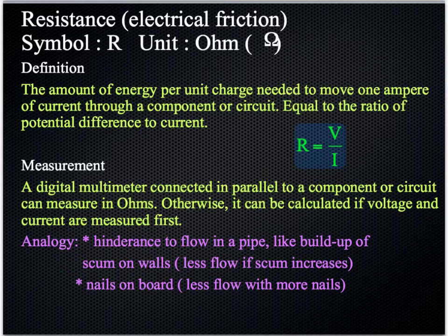A measurement. To measure this, well, you could use a digital multimeter connected in parallel to the component or the circuit. But the circuit needs to be switched off. It can't be on. It can't be live. Otherwise, you could measure voltage and current separately and calculate the ratio yourself to find the value of resistance. Another analogy is the hindrance to the rate of flow of water in a pipe. For example, you could think of the build up of scum on the walls, so less flow as the scum increases. Or the nails on the board. More nails would be more resistance, so you'd have less flow or a lower flow rate more correctly.